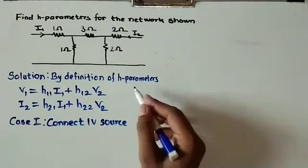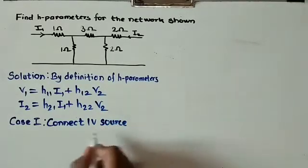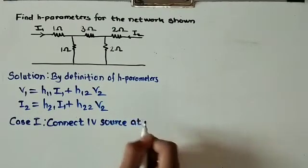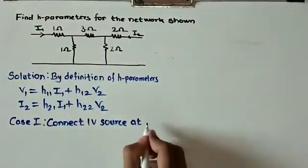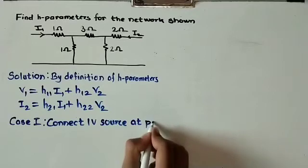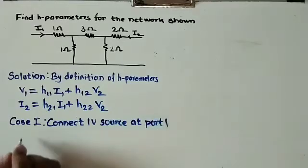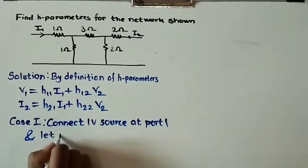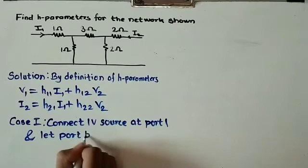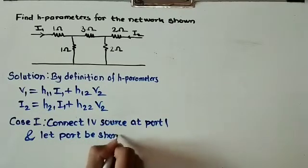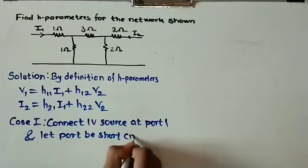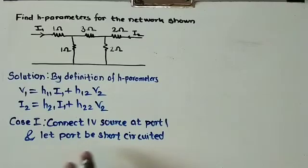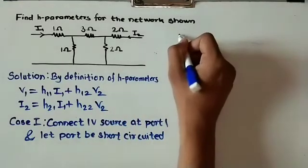The concept we are using is connecting a 1-volt source at port 1 and short-circuiting port 2. If we short-circuit port 2, the circuit diagram will be modified accordingly.